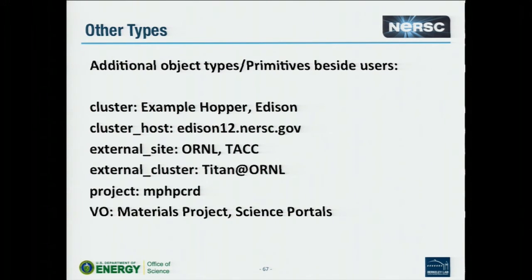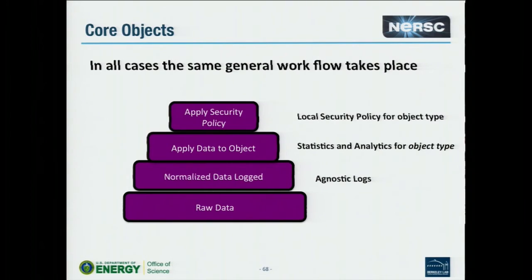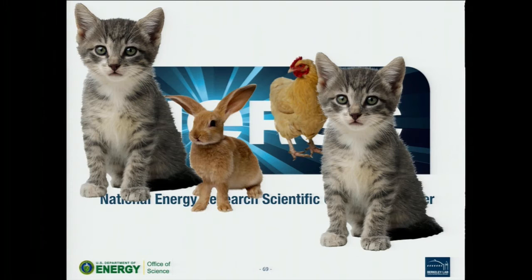Additional types of object abstractions: clusters, cluster hosts, whole external sites — generalized behaviors you can apply this idea to. Virtual organizations is one I kind of like. I made a pyramid because pyramids appear to be the new thing. You have raw data, you normalize it, and that's it.